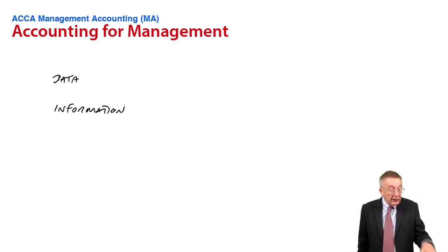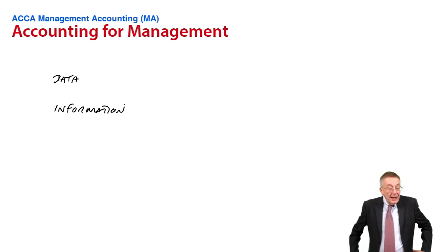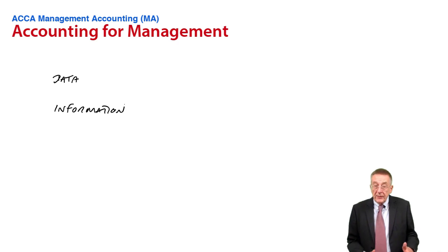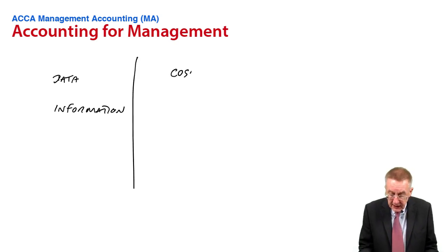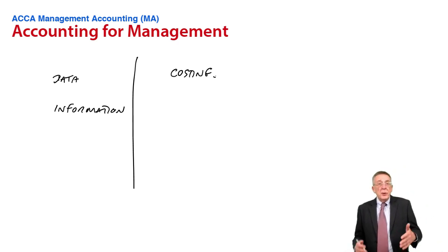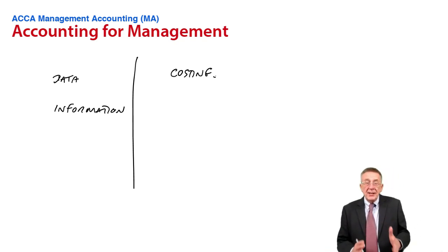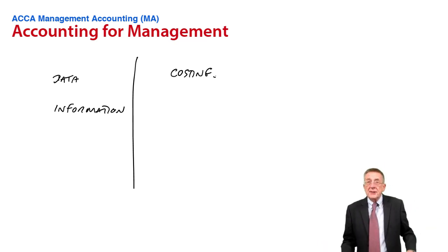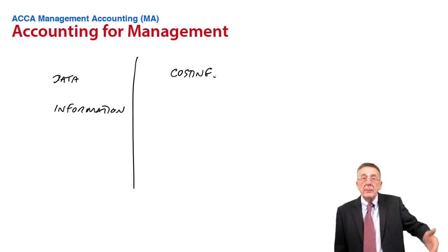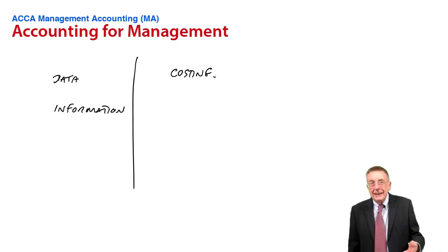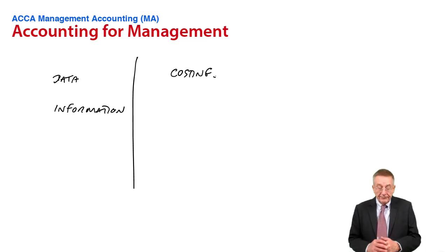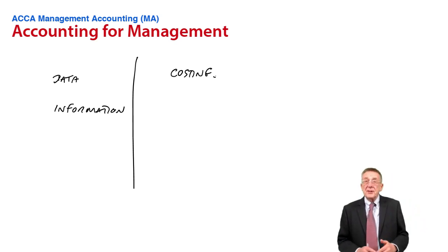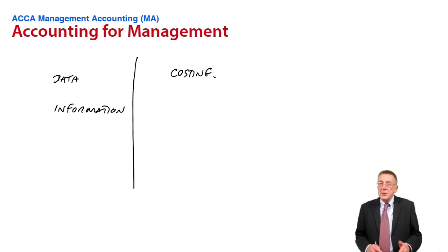Over the page, paragraph four covers the main managerial processes — effectively a summary of the syllabus. The first one is costing, which is terribly important. If we're a company producing goods, suppose we make desks, we need to work out how much each desk costs to make — if only for fixing the selling price. If a desk costs $20 to make, obviously you want to sell it at a price higher than $20. There are various different approaches and methods we can use for costing, depending on what we're producing or what service we're giving.